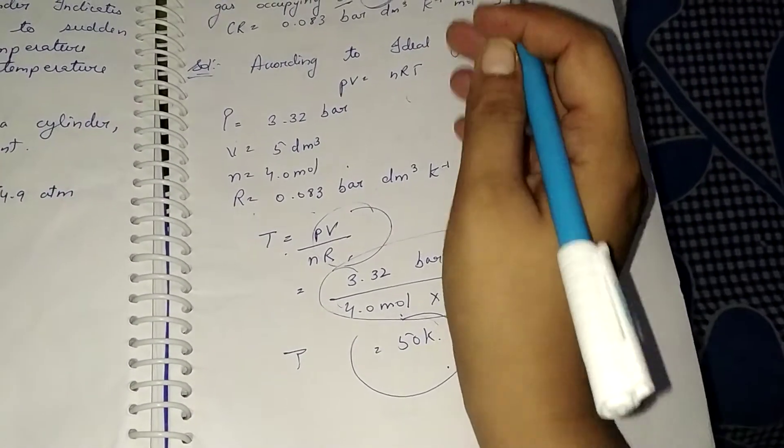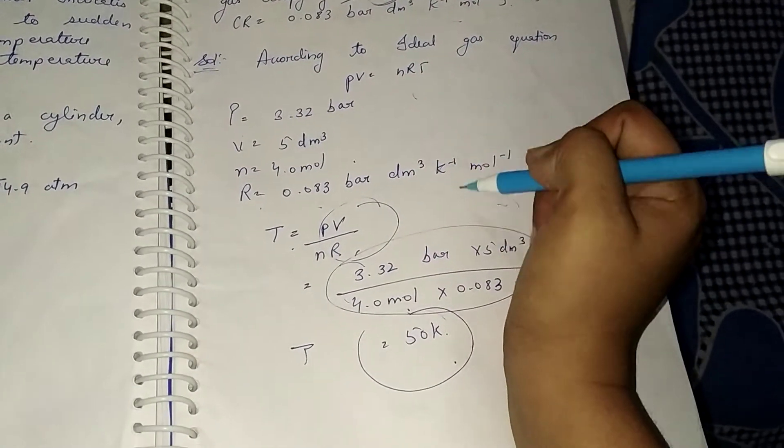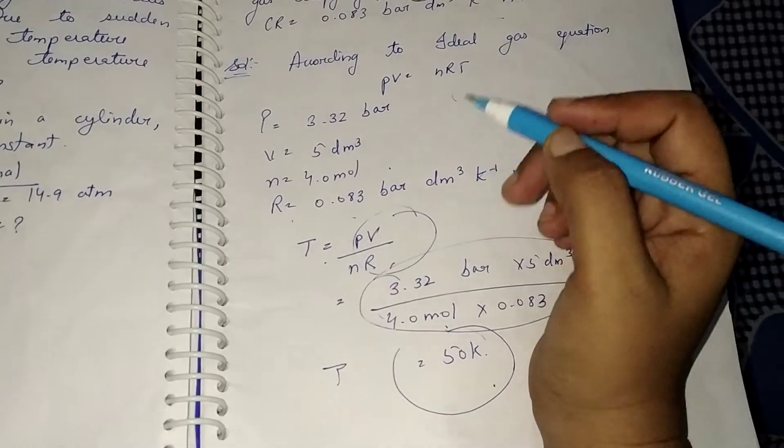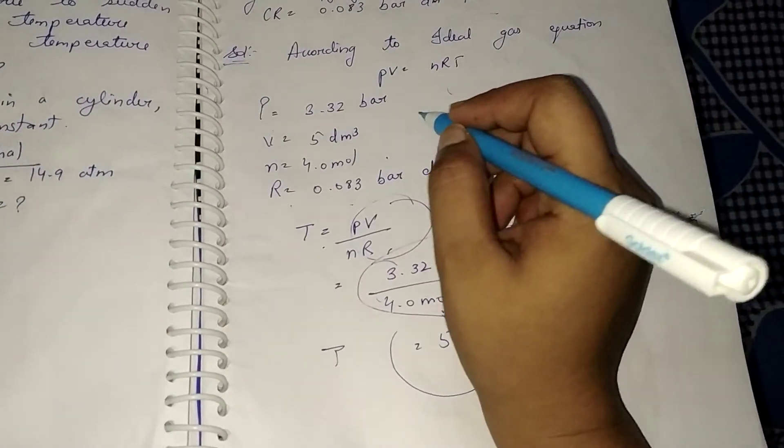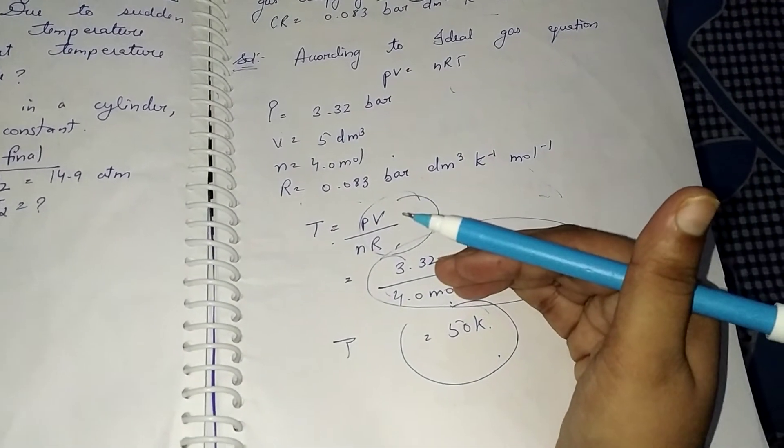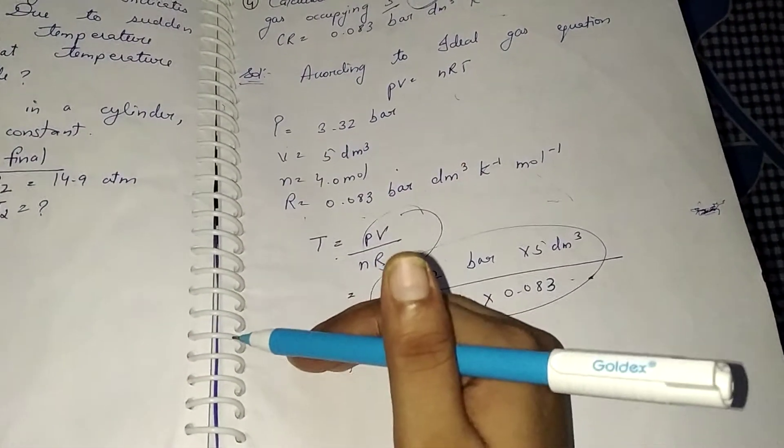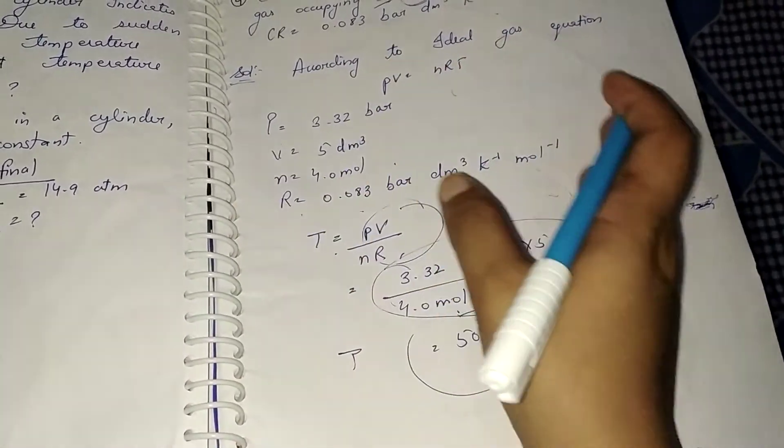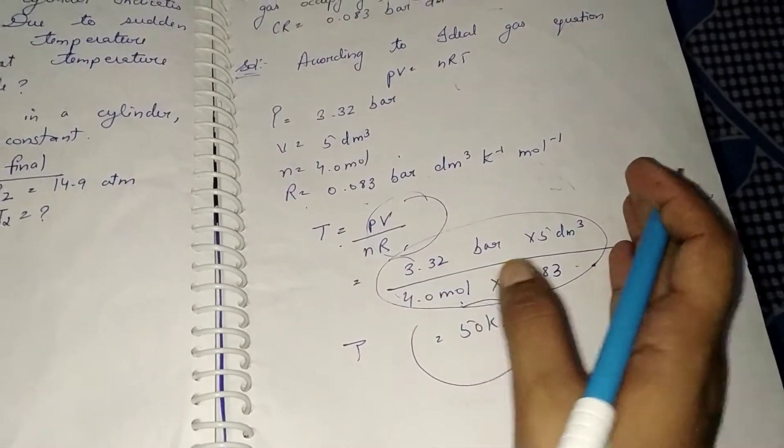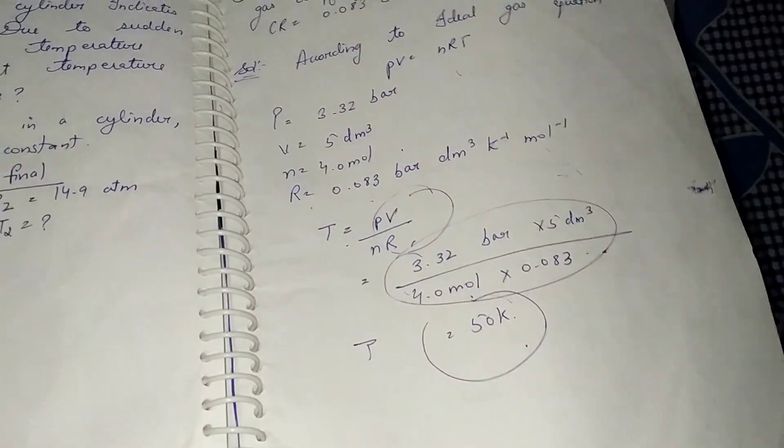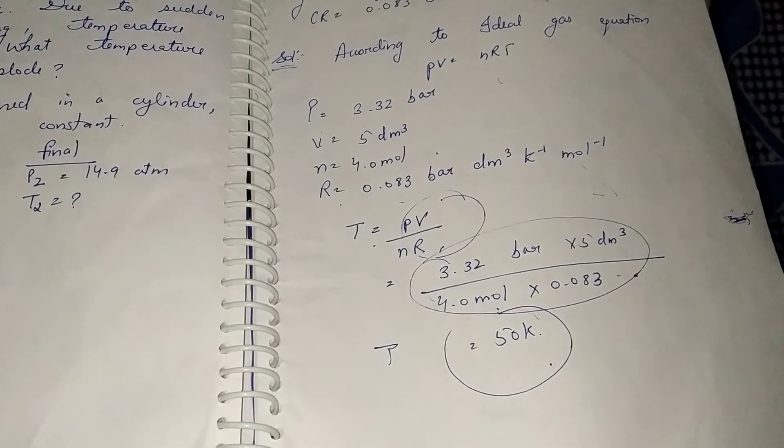For any numerical you solve, first of all write down what is given. After that, see what constant is there and according to that, remember the laws and equations. Look at the equation, and put what you need to find out on the left hand side and the remaining terms on the right hand side. Then apply the values, and the answer will be calculated.